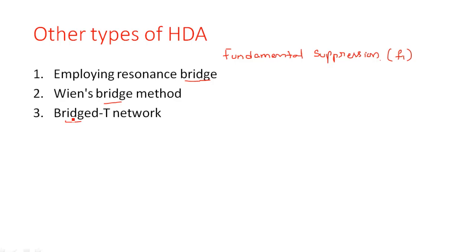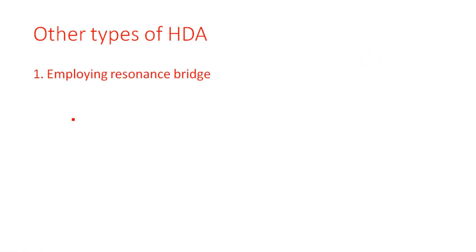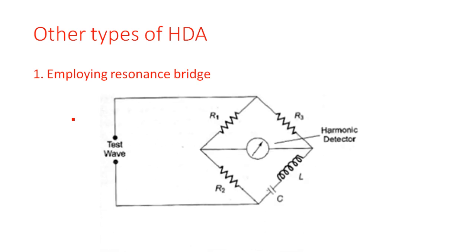Let us see one by one how the fundamental frequency component is going to be suppressed in different ways. The first method is employing a resonance bridge. This is the circuit diagram showing how to suppress the fundamental frequency component in the incoming signal. In the test wave, I can give a complex waveform which consists of F1, F2, F3 and so on — different frequency components along with the fundamental frequency component F1. When such a signal is applied to this bridge, what are the different components in the four arms of the bridge?